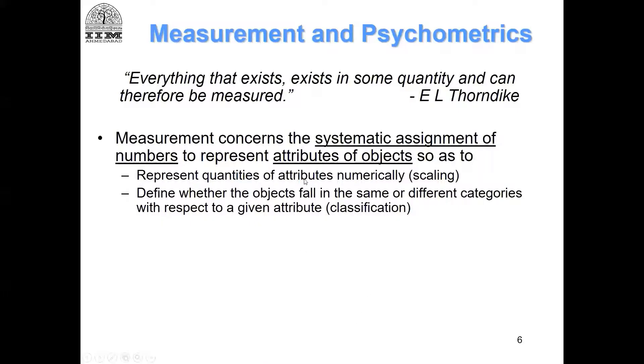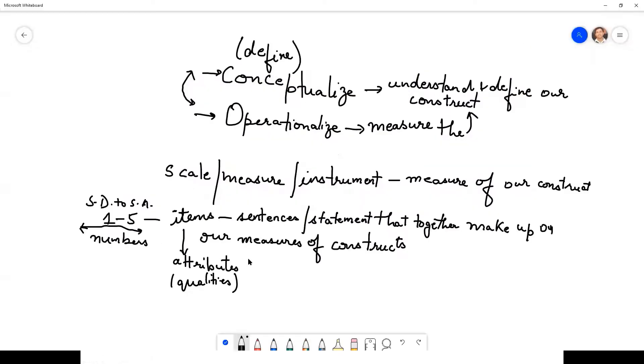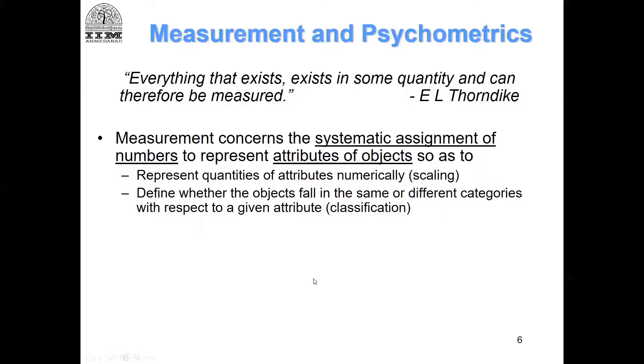We represent these quantities of attributes numerically, which I just mentioned. You are now giving, assigning numbers to these attributes, and through these numbers you can also assign categories. You can say this is low, medium, high. You can also classify - you can categorize them as poor on certain things, rich on certain things, just based on the numbers that you have. These are different categorizations that are possible once you assign numbers to the construct.